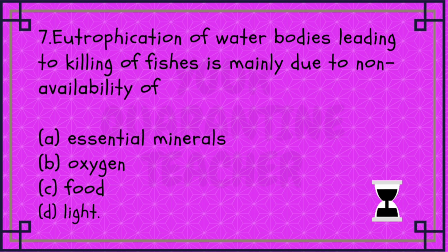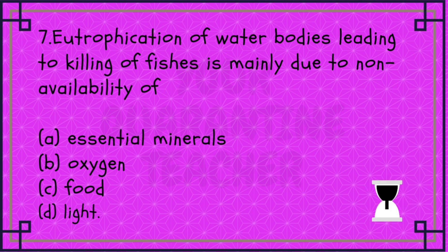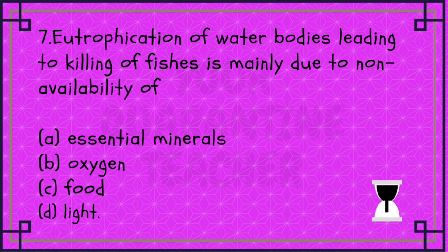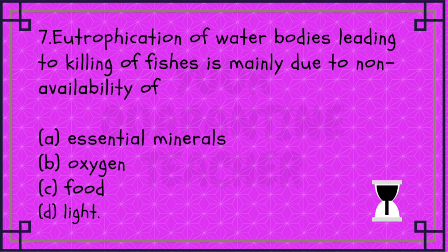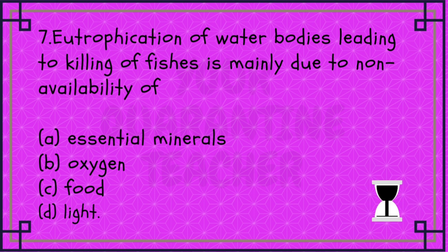It is the excessive growth of algae, plants and animals in the water bodies. Because of the growth of algae, it is called Eutrophication.